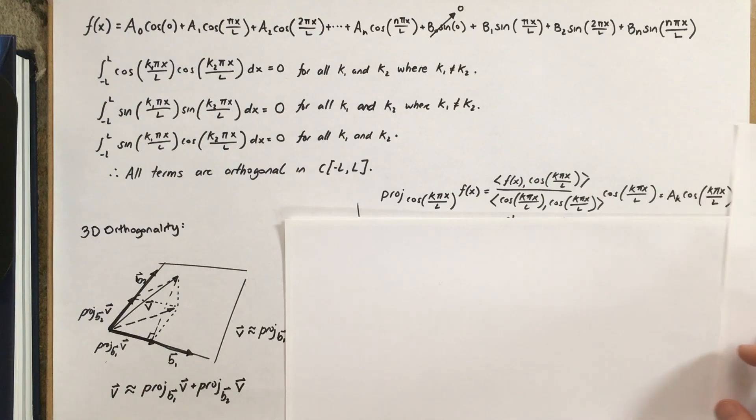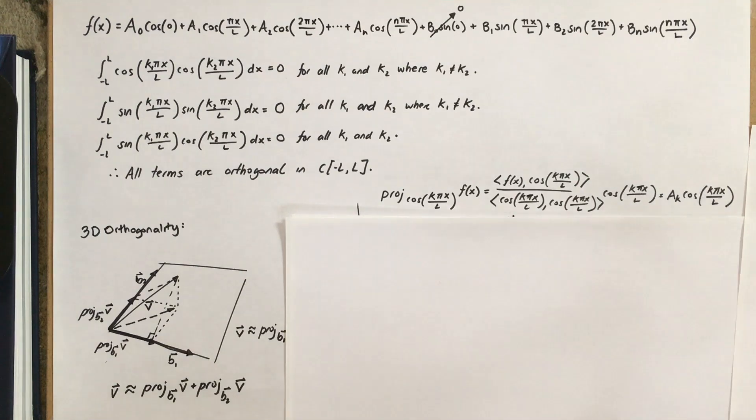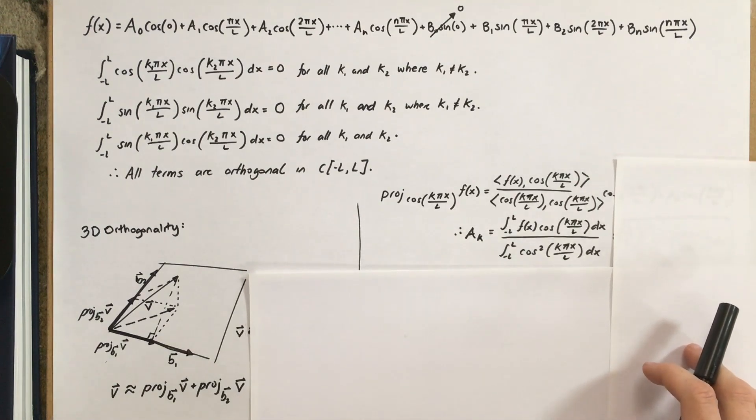And remember, this is just the amount of cosine k pi x over L in the direction of f of x, right? So, it's scaled by a k, if you'd like to think about it that way. So, what we can do here is we can cancel out this term, and we'll get this.